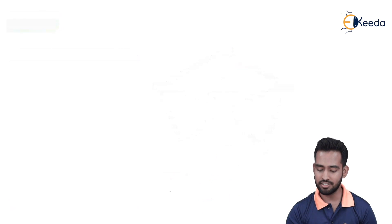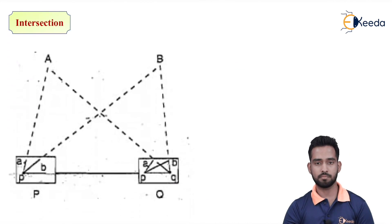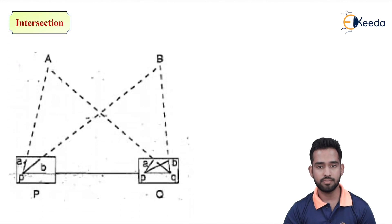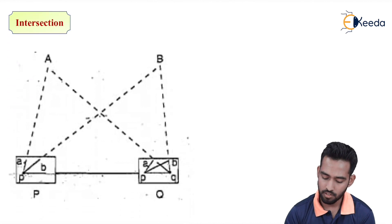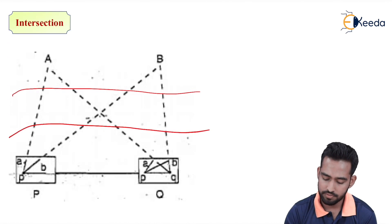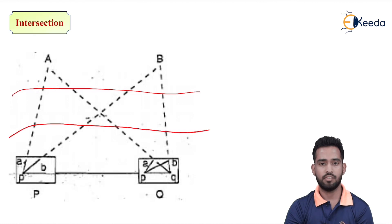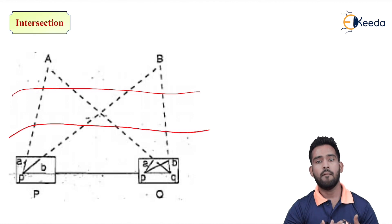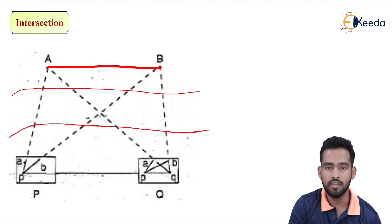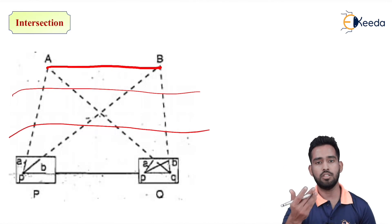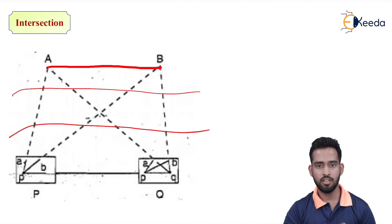After the Radiation method, the next is the Intersection method. Intersection method is used whenever there is an obstacle between your observation point and the details you have to plot. For example, if there is a river occurring between two points, and from one bank we have to calculate the distance between points A and B which are on the opposite bank — it is not possible to find the actual distance without being present over there. So in this case, we use the intersection method.